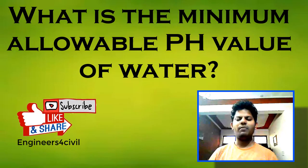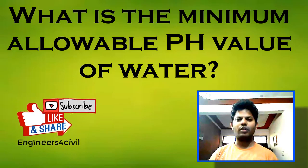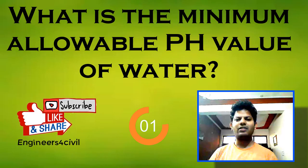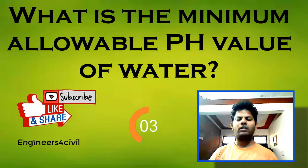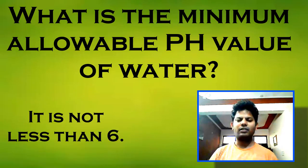What is the minimum allowable pH value for water used in construction? The allowable pH value of water is minimum 6; below 6 it should not be used.